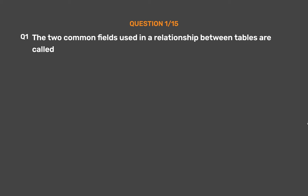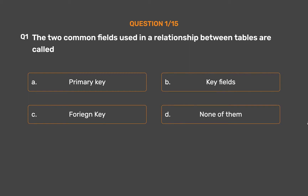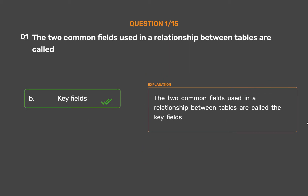The two common fields used in a relationship between tables are called. Option A: Primary Key. Option B: Key Fields. Option C: Foreign Key. Option D: None of them. The correct answer is Option B — Key Fields. The two common fields used in a relationship between tables are called the key fields.